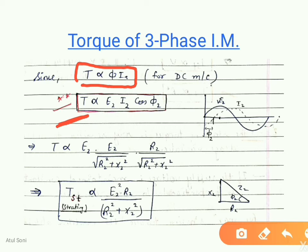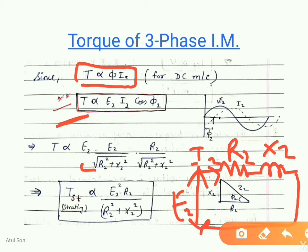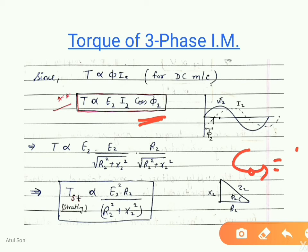In the induction motor, at the rotor we have the EMF produced E2, and the 3-phase distributed winding in the rotor with parameters R2 and X2. As the rotor circuit is closed, the current flowing in the rotor I2 is given as E2 divided by √(R2² + X2²). Substituting into the torque equation, we get T ∝ E2 · [E2 / √(R2² + X2²)] · cos φ2, where cos φ2 = R2 / √(R2² + X2²).